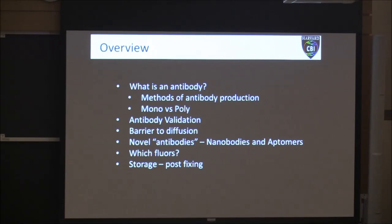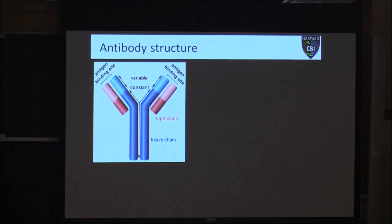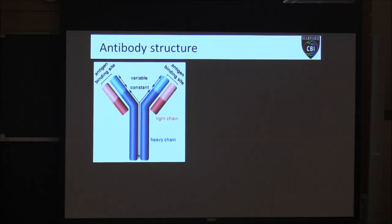I'm also going to talk about which fluorophores are best to put on your secondary antibodies, and then we'll finally talk briefly about how to store your samples for long term. On this slide we have the basic structure of an antibody — I'm sure many of you are familiar with this from immunology classes. Essentially it's made up of two heavy chains and two light chains, held together by disulfide bridges.